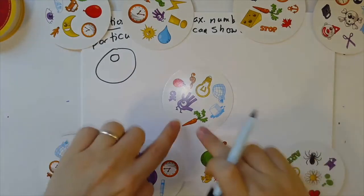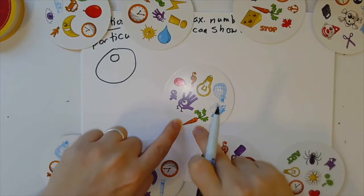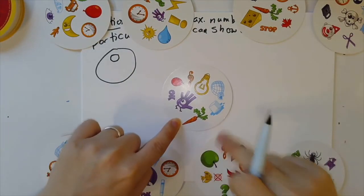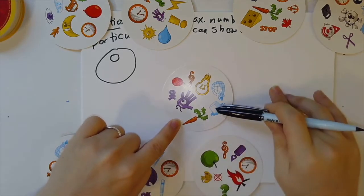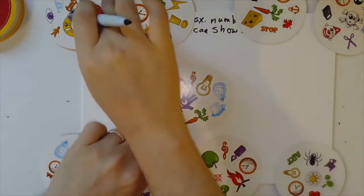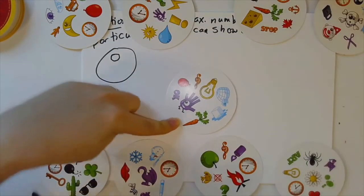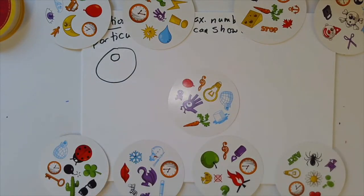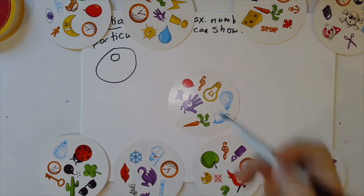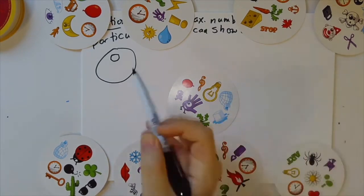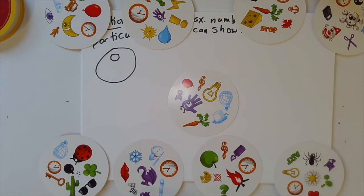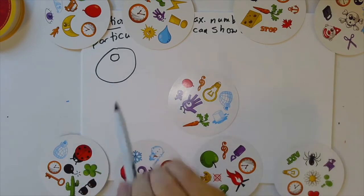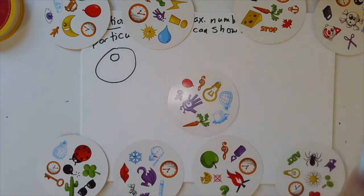It can't have a symbol in common with this card. Why not? Because every symbol on this card shows up on one of these eight cards that also have a clock on them. And so any symbol from this card that I put here will then have both a clock and that additional symbol in common with one of these eight cards.